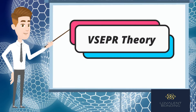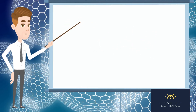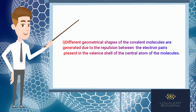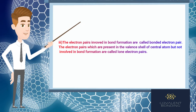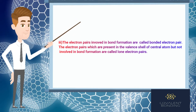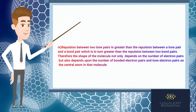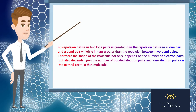Postulates of the Valence Shell Electron Pair Repulsion (VSEPR) Theory: 1. Different geometrical shapes of covalent molecules are generated due to repulsion between electron pairs present in the valence shell of the central atom. 2. These electron pairs arrange themselves so that repulsion among them becomes minimum. 3. Electron pairs involved in bond formation are called bonded electron pairs; those not involved are called lone electron pairs. 4. Repulsion between two lone pairs is greater than between a lone pair and a bond pair, which is greater than between two bond pairs. Therefore, the shape of the molecule depends on both the number of bonded and lone electron pairs on the central atom.